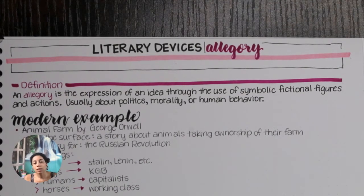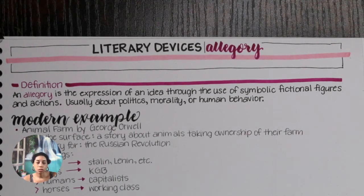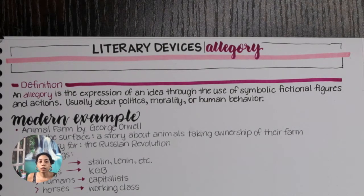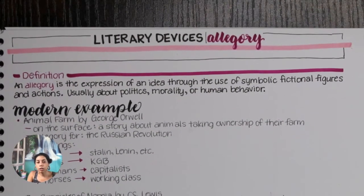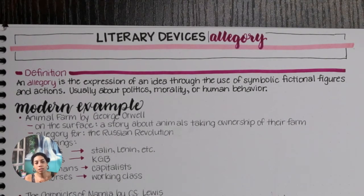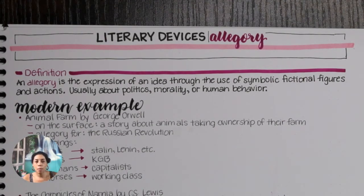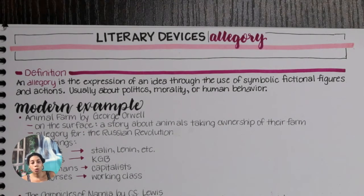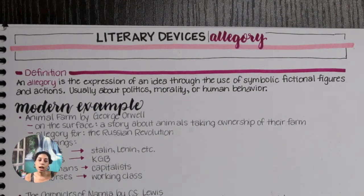I wanted to note that bias of my own and highlight it, because I did write 'fictional figures' in the definition since that's what the actual dictionary definition says. So let's jump into a modern example. I wrote down two modern examples. The first — I think I have read this book, though it was not required reading at my high school, so I added a second one that may be slightly more popular. The first example is Animal Farm by George Orwell. It is by and large the most well-known example of an allegory out there and it is perfect for explaining what an allegory is.